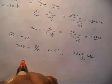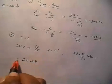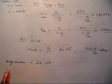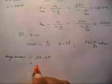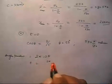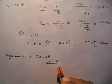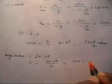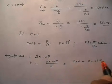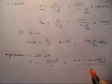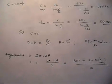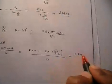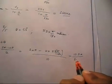The angle travelled by the source from the minimum to maximum frequency position is 2 pi minus 2 theta. The arc length is (2 pi minus 2 theta) times R, and the time required is this arc length divided by the speed of the source, which is 10 meter per second. Substituting the values, the time comes out to be 127 pi divided by 300 seconds.